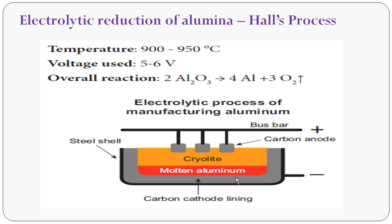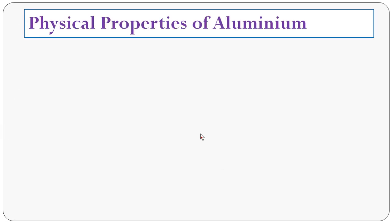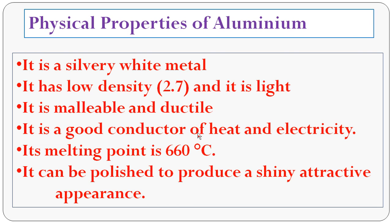Now the physical properties of aluminum: It is a silvery-white metal with low density of 2.7, making it a very light metal. It is malleable and ductile — it can be formed into sheets and wires. It is also corrosion resistant, a good conductor of heat and electricity, has a melting point of 650°C, and can be polished to produce a shiny, attractive appearance.